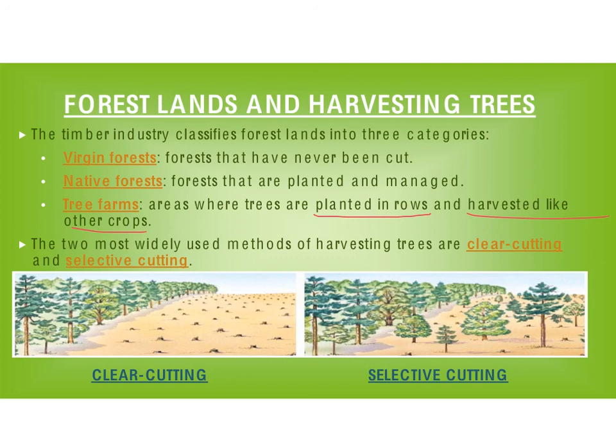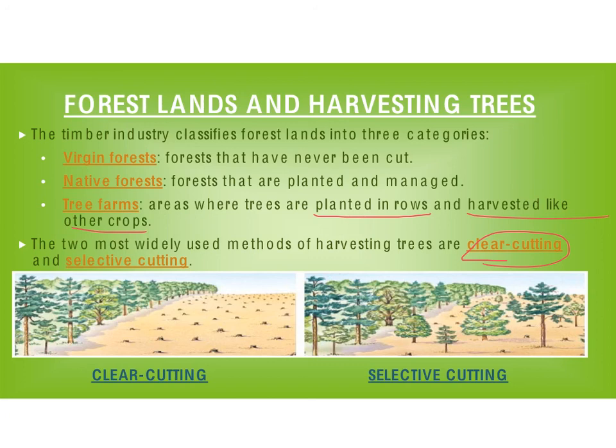In a native forest where we're managing the trees, we can either clear-cut a forest — as you can see in this picture, you cut everything so the land is clear — or we can selectively cut a forest, where we don't cut everything and the land is not left clear. Clear-cutting clears the land; selective cutting does not.